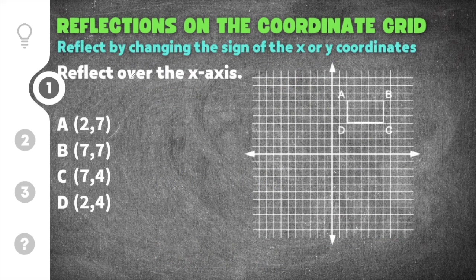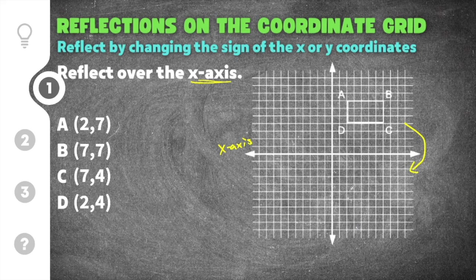Our first practice problem says to reflect over the x-axis. The x-axis is the horizontal axis. We already have our figure — A, B, C, D — drawn on the coordinate grid, and we have our x and y-coordinates listed on the left. Now we're reflecting over the x-axis, which means this figure is going to flip down across the horizontal line. For reflecting over the x-axis, you keep the x-values the same and change the sign on the y-values.